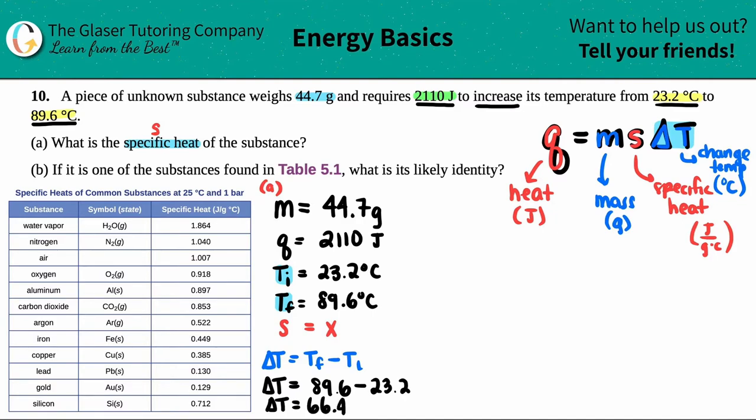Okay, so I'm solving for s, which means that I should know the Q, m, and I found out the delta T, so let's go for it. The Q—and it's in the correct unit, it has to be in joules—so 2110 equals the mass, that's in the correct unit, so I could just write that down: 44.7. I'm solving for x, so I'm solving for s. I like to just plug it in as x; it's just a habit. You could put it in whatever letter you like. And then the delta T was the 66.4. Let's just do a little algebra here. I'm going to multiply the 44.7 times the 66.4.